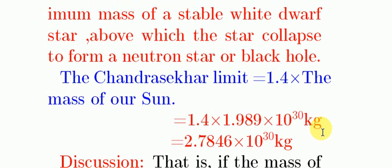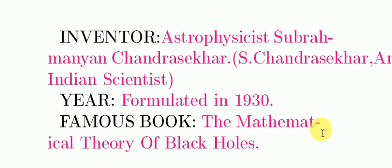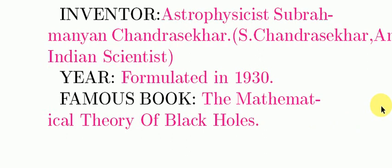The Chandrasekhar Limit was given by the astrophysicist S. Chandrasekhar — Subrahmanyan Chandrasekhar — an Indian scientist. He formulated this in 1930. A famous book of S. Chandrasekhar is 'The Mathematical Theory of Black Holes,' which is a renowned work.